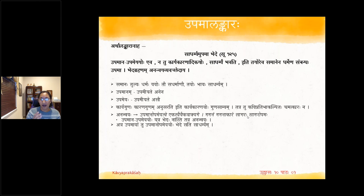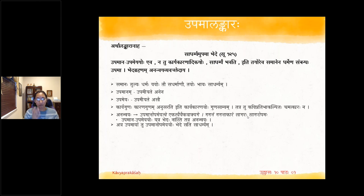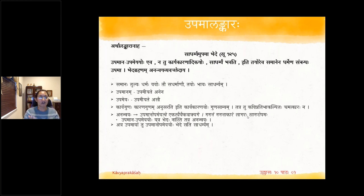A lot of Alankaras are based on Upama. Upama is like an actor who takes on different roles — the same Upama can manifest in many forms. Upama means similarity between two objects. When you compare two objects, say Mukham and Kamalam, the Upamanam is something beautiful and accepted as beautiful in the whole world — it is a Prasiddhavastu, a popular standard of comparison.